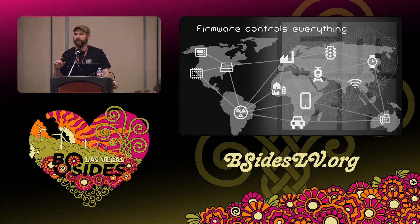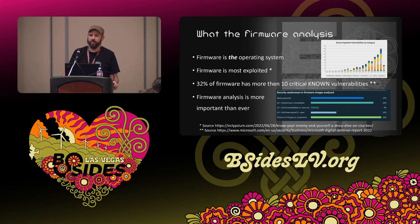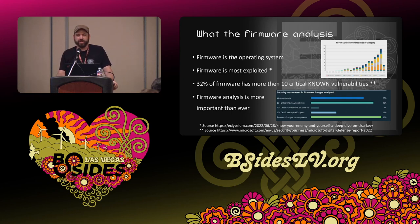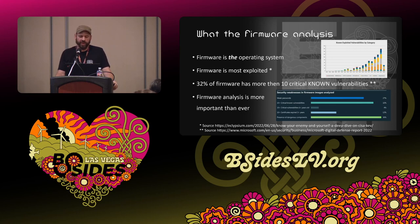At the bottom level there are these embedded devices running some operating system — in rare cases a full-blown Linux OS, more often a stripped-down Linux, or real-time operating systems like VxWorks, or in very rare cases Windows. The generic term for these systems is firmware. According to firmware expert company Eclipseum, firmware is the most exploited category over the last few years. The Microsoft Digital Defense report found that more than 30% of analyzed firmware has more than 10 known critical vulnerabilities.